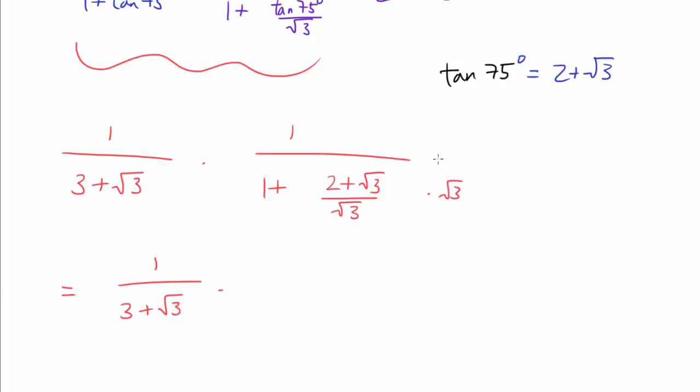And this is 1 over (3 plus square root of 3). I'll multiply by square root of 3 to top and bottom for this one. So square root of 3 over (square root of 3 plus 2 plus square root of 3), also known as (2 plus 2 times square root of 3). And we can also factor out a 2, so 2 times (1 plus square root of 3).